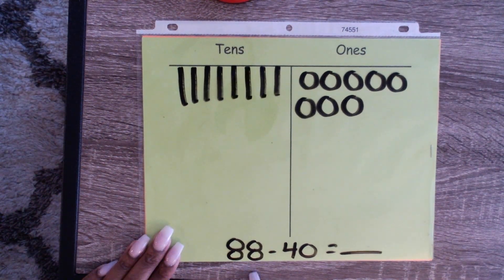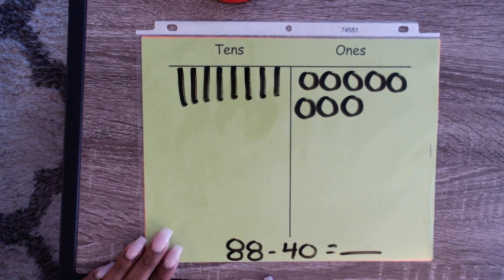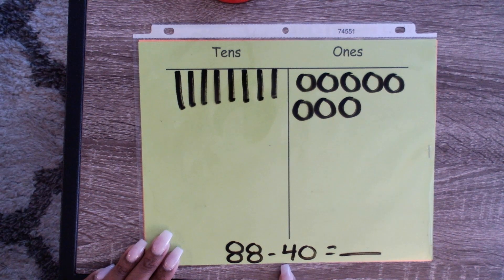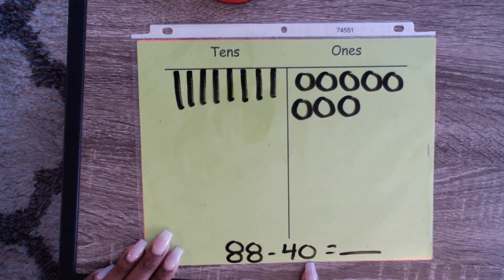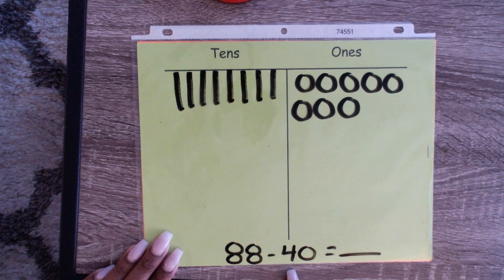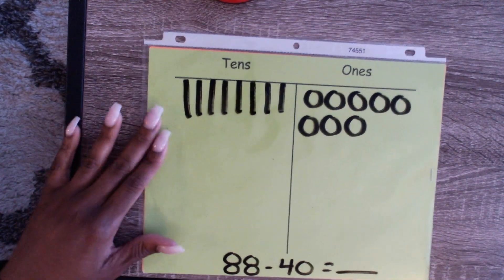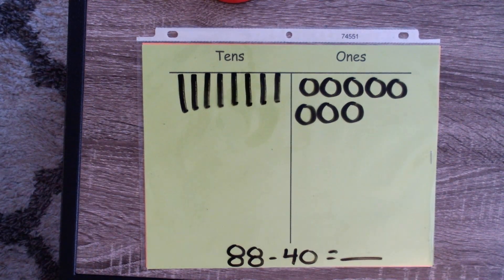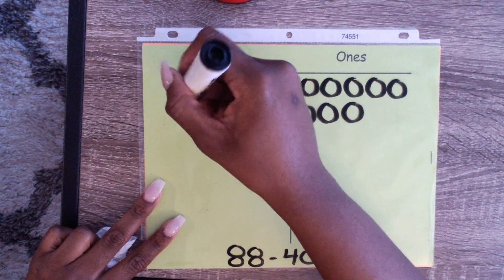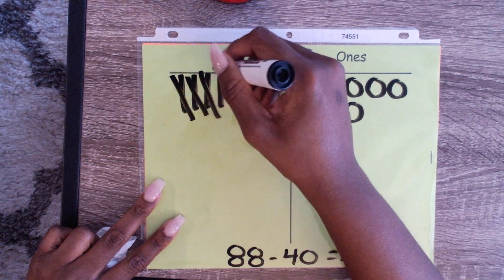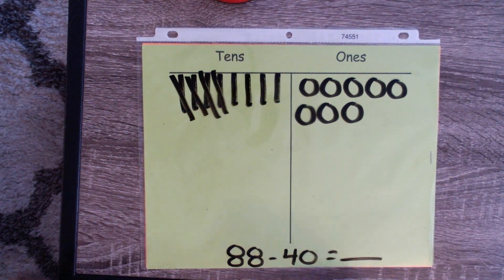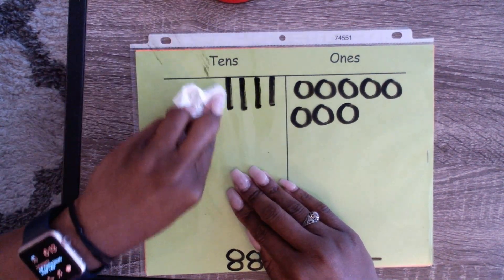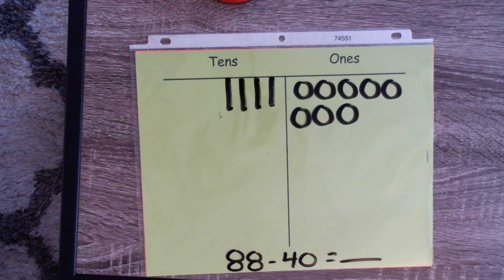Alright, so 88 minus 40. Now we're going to take away 40. We're not going to change the ones place, only the tens place, because there's a zero here. We're only going to take away 4 tens. I love to use these erasable sleeve protector sheets because they can easily erase. You can teach your child to simply mark out one, two, three, four, or you can have them erase 4 tens.